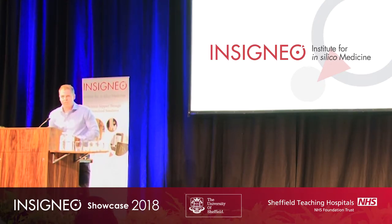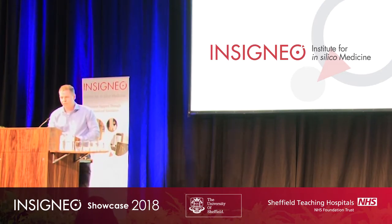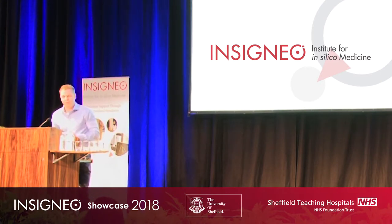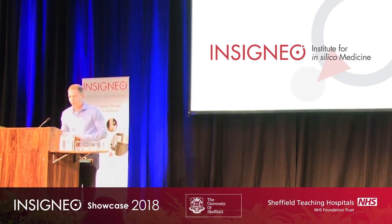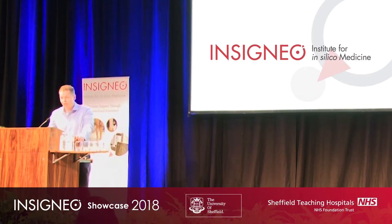Coronary artery disease is the leading cause of death in the world, so it's very common and very serious. It occurs when you get a buildup of atherosclerosis — fatty plaque inside the coronary arteries, which are the fuel pipes to the heart — restricting blood flow and causing diseases like angina, heart attacks, heart failure, and of course death.